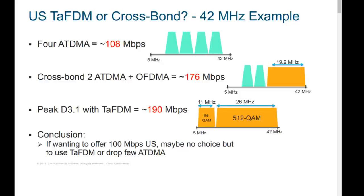Cross-bonding uses dedicated spectrum for 3.1 and dedicated spectrum for 3.0 and 2.0, but allows a 3.1 modem to spread its data across both styles of upstream channels simultaneously. So the 3.1 modem can burst and transmit on both the SCQAM channels and the OFDMA channels at the same time.